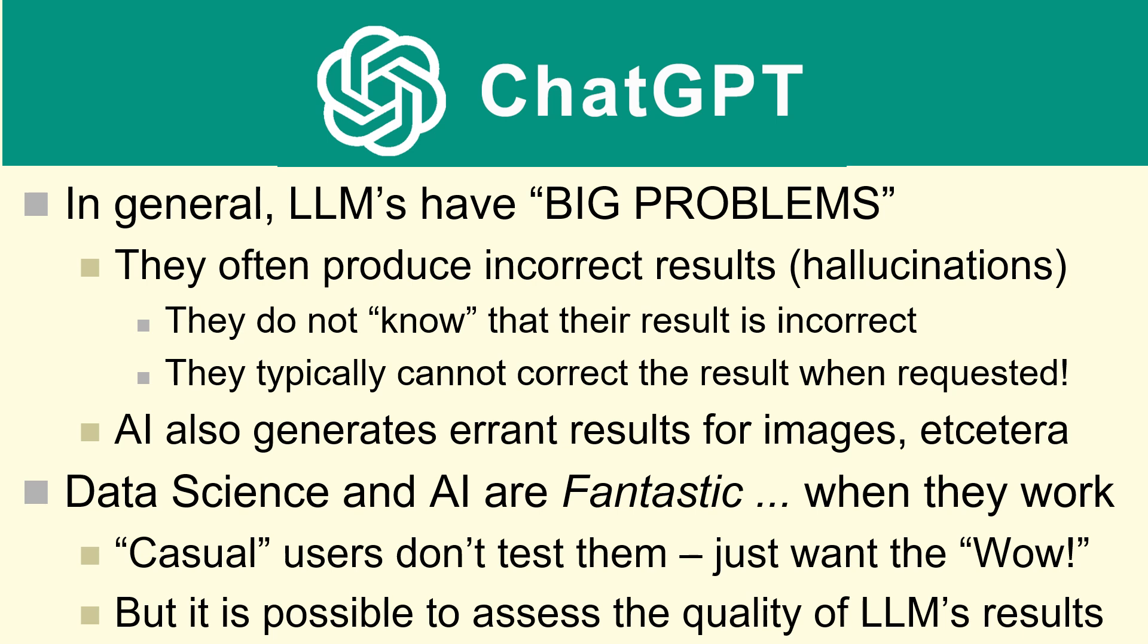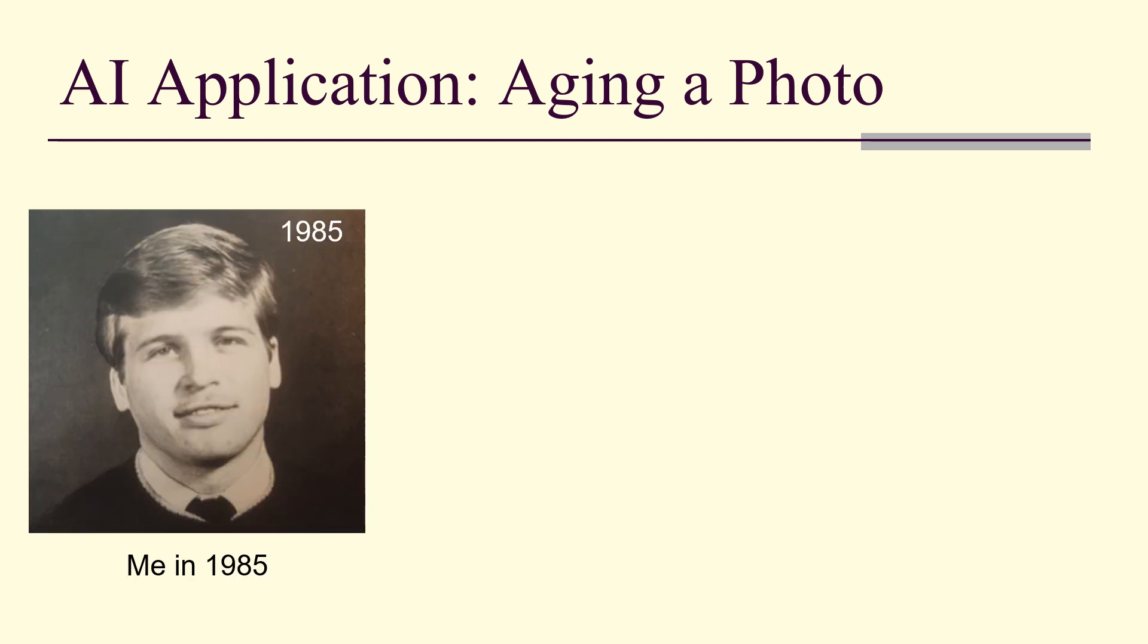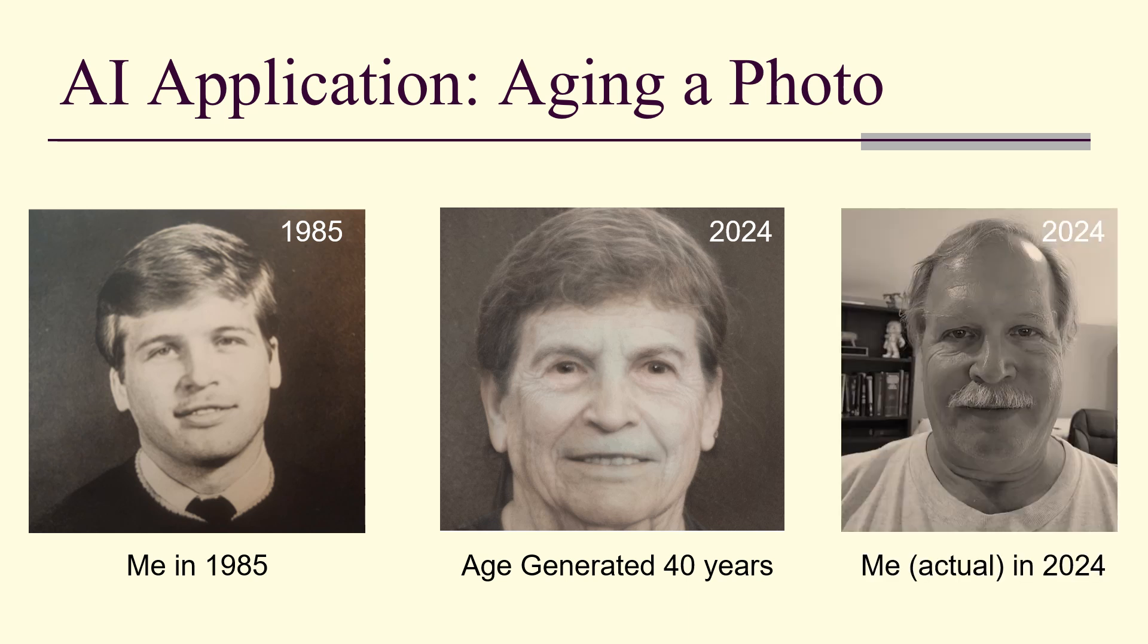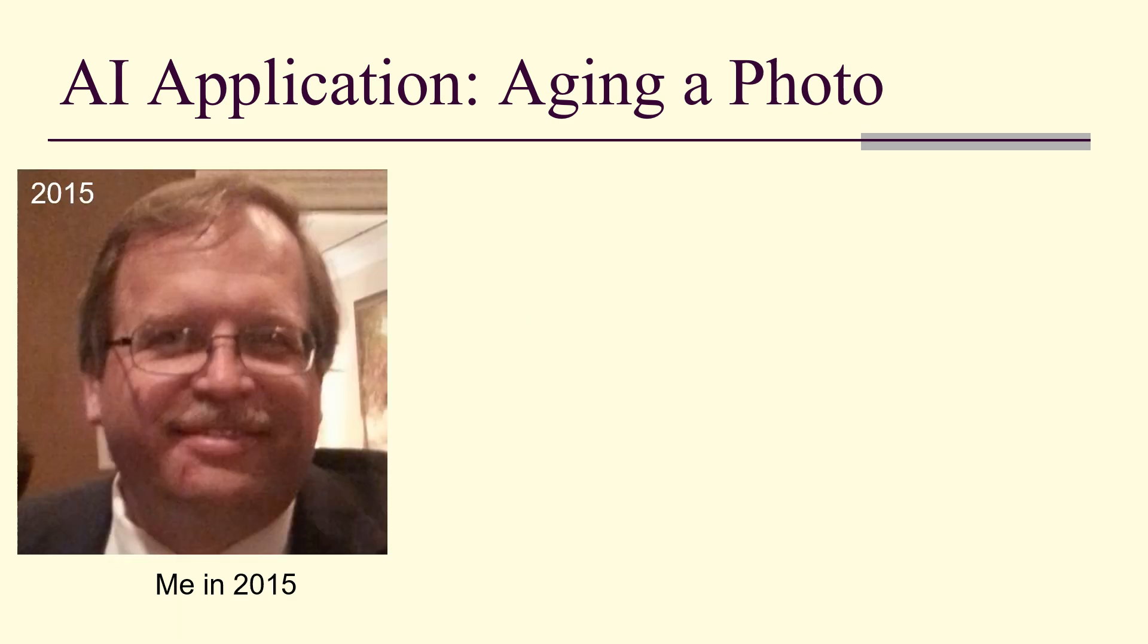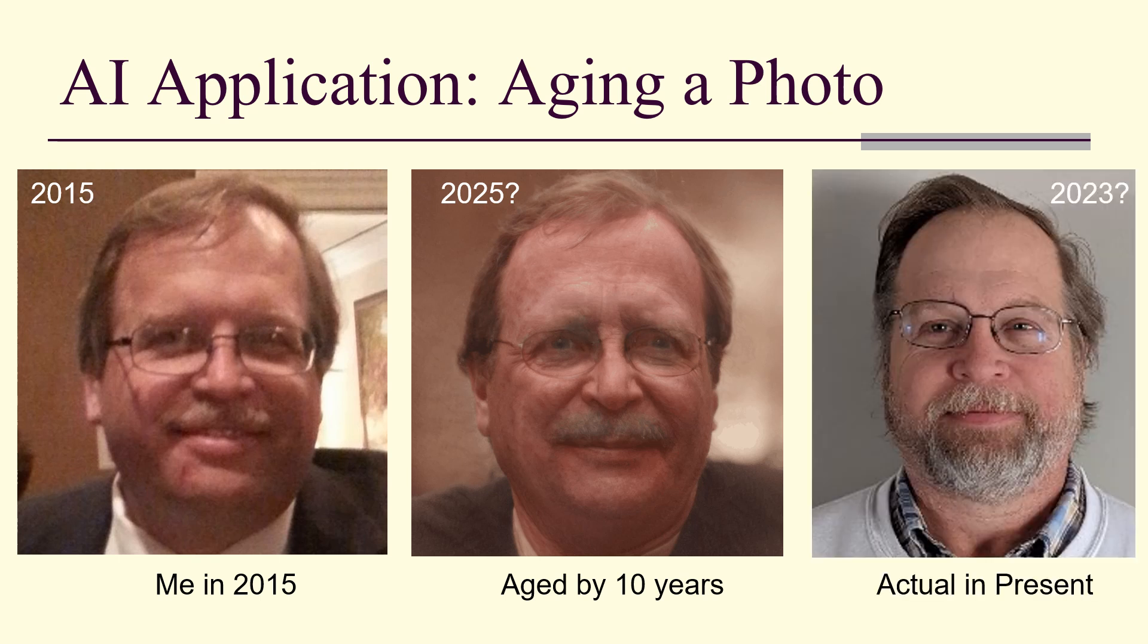For example, aging a photo - this is very popular. Here's me in 1985, and here is me aged 40 years to approximately 2024, and here is me today - not close, in my opinion. Here I am in 2015, here I am aged 10 years. Well, that looks pretty good, doesn't it? Except it doesn't look anything like me.